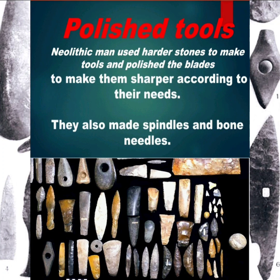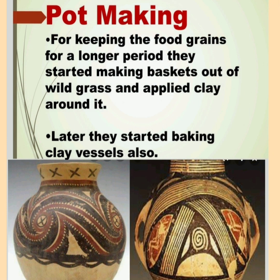Neolithic man used harder stones to make tools and polished the blades to make them sharper according to their needs. They also made spindles and bone needles. For keeping food grains for a longer period, they started making baskets out of wild grass and applied clay around them. Later, they started baking clay vessels as well.